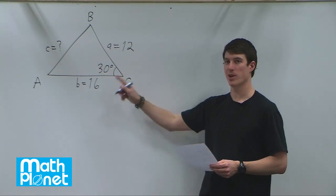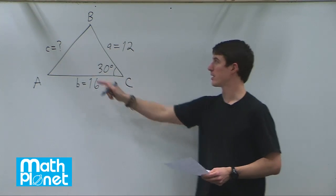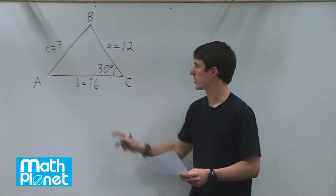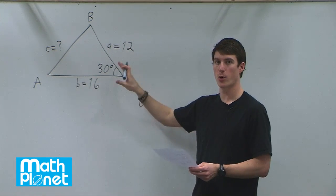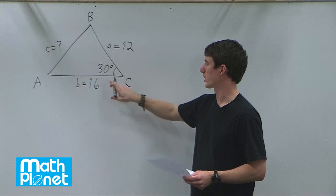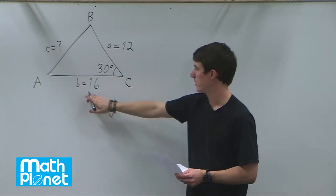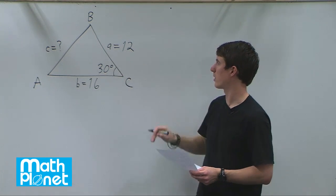So for this triangle, we're given some information about it and we want to find this length c. So we have an ABC triangle, we don't know all the specs about the triangle, we're given this angle 30 degrees, this side 16, and this side 12.